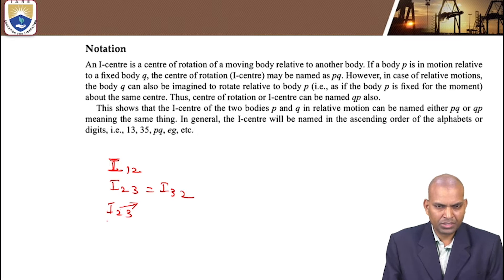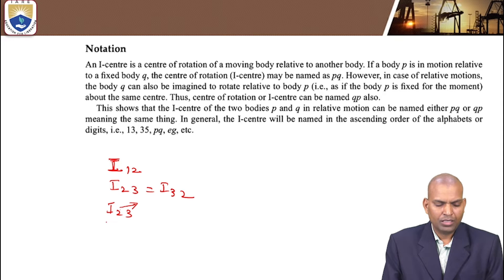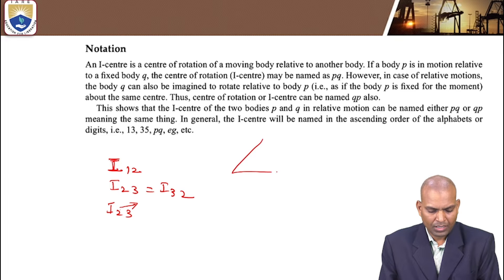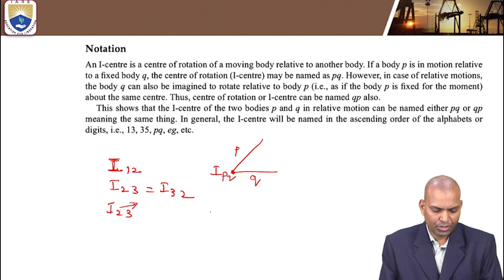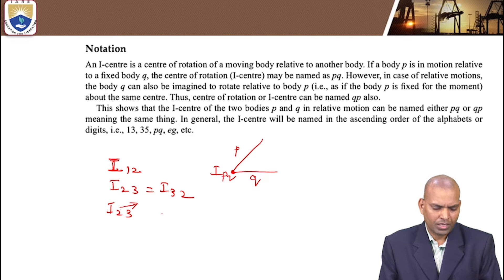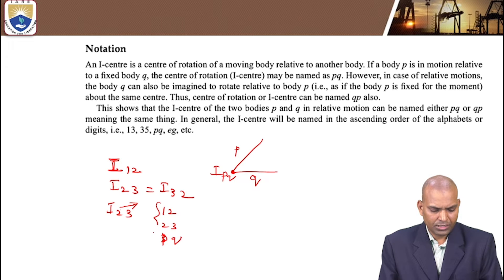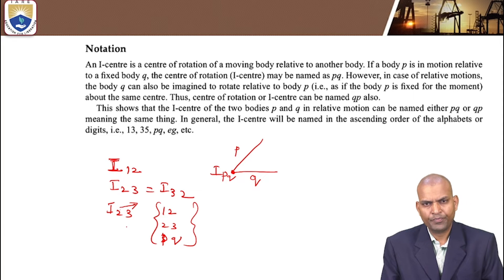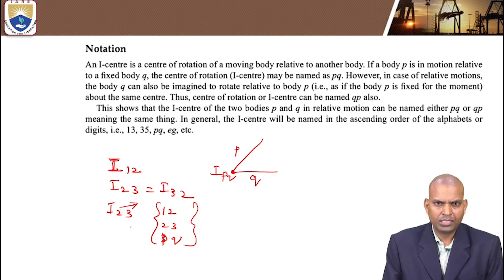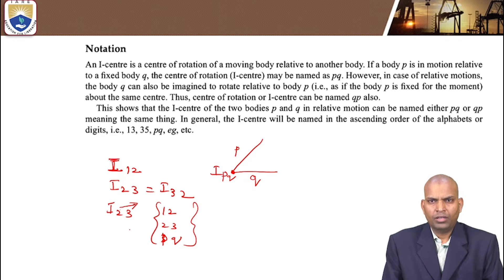In cases where numerical representation is used, we follow the iCenter notation with alphabets. For example, if there is link p and link q, the iCenter is written as iPq in ascending order. Some textbooks simply use 1,2 or 2,3 or pq without the 'i' prefix, following only letters in ascending order notation.